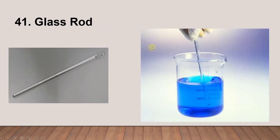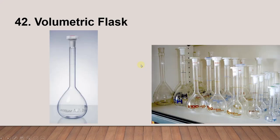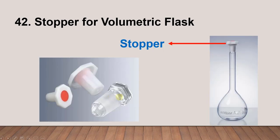Next is various glassware that you can see here. Next is the volumetric flask. This is important when you want to prepare a precise concentration — you need a volumetric flask. And of course, when you work with a volumetric flask you need a stopper.